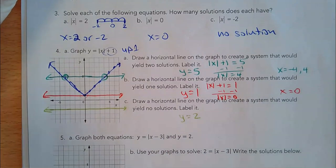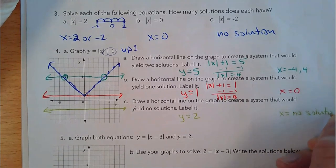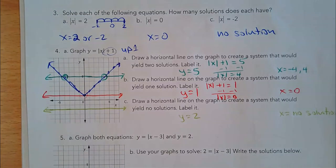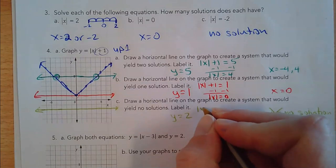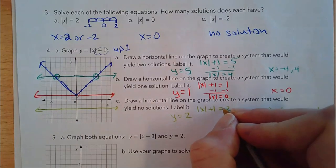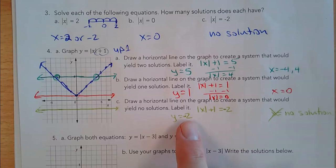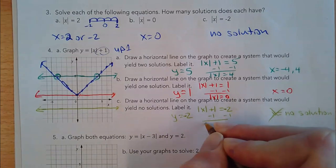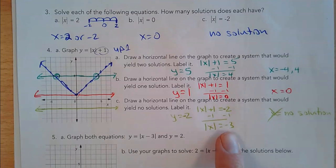Over here, if I try to solve the case where it equals negative 2, we already know x doesn't equal anything — no solution. If I take the absolute value of x plus 1 and set it equal to negative 2, then subtract 1 from both sides, this says the absolute value of x equals negative 3. You can't have an absolute value equal a negative. That's why there's no solution.